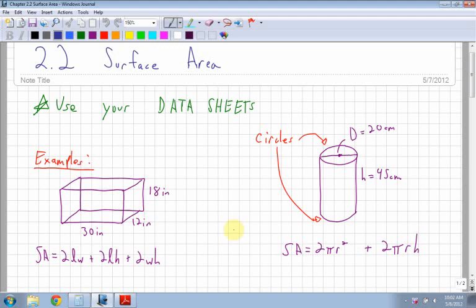So section 2.2 is surface area. This is going to be a bit of a longer video just because we have a lot of examples to get through.